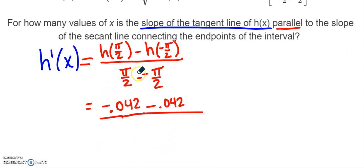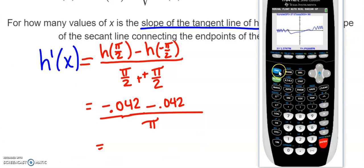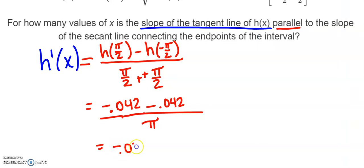And then this one is minus 0.042 again. Then we have π/2 minus (-π/2), which really is plus, so this would all be divided by π. So if I get a more exact answer from my calculator, I can quit and calculate: -0.042 minus 0.042, divided by π. And we get -0.0267.